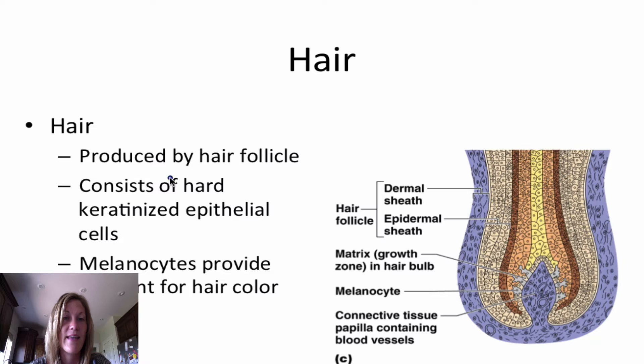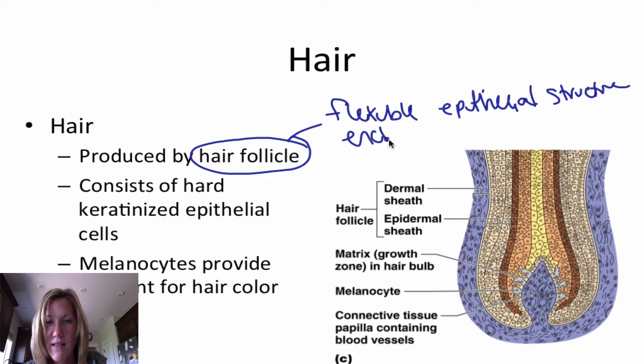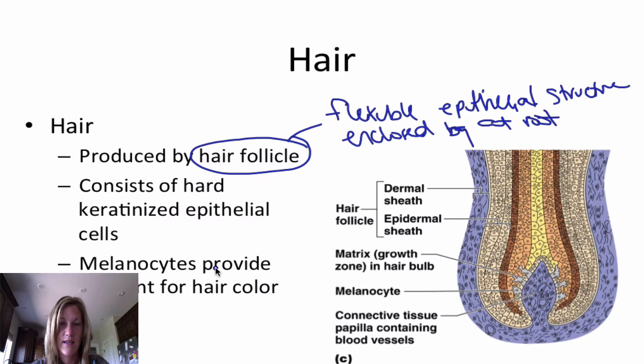Let's move into hair. Hair is produced by the hair follicle and consists of hard keratinized epithelial cells. Melanocytes provide pigment for hair color. The hair follicle is a flexible epithelial structure enclosed at the root.